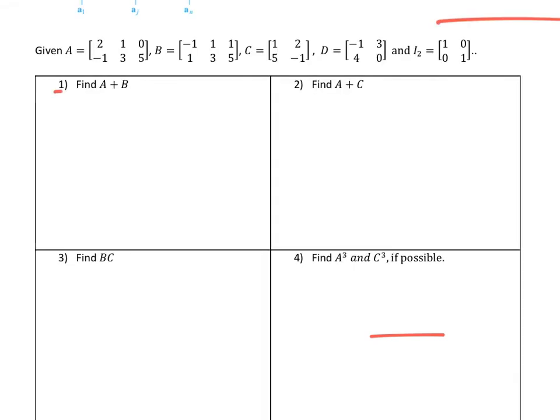Let's get into addition. Addition just means I add corresponding pieces. I've given you all these matrices, and I want to find A + B. I'm going to take corresponding pieces—these two are like pieces, so I add them together. 2 - 1 gives me 1.